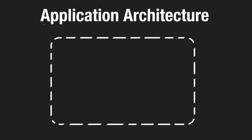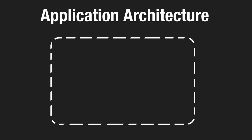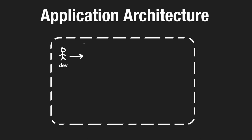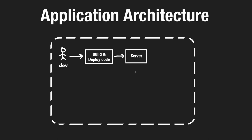Let's take a look at the high-level application architecture for a production app. This will serve as a template to expand upon throughout the course. We start from a developer's perspective: we write code that gets deployed somewhere, eventually reaching a server where the code runs. A server, for now, is just a computer that can handle requests — it serves users.